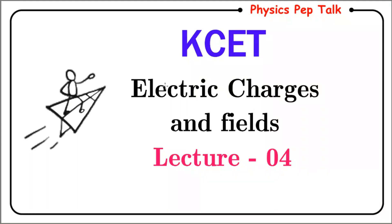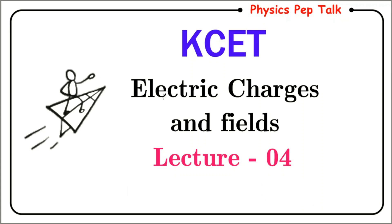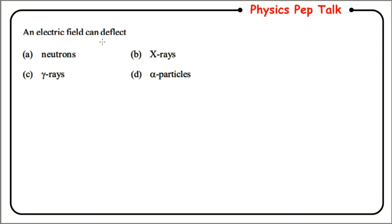Hello everyone, welcome to Physics Pep Talk. Let us continue solving MCQs on electric charges and fields. The first question: an electric field can deflect which of the following — neutrons, x-rays, gamma rays, or alpha particles? We know that only charged particles are deflected by an electric field. Neutrons are neutral particles, so they will not deflect. Therefore option A is wrong.